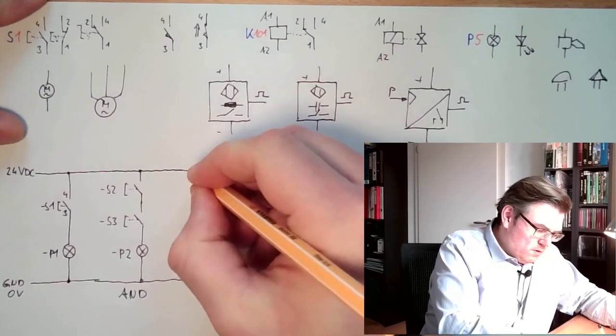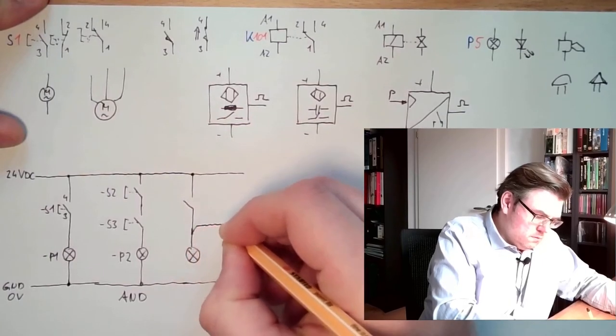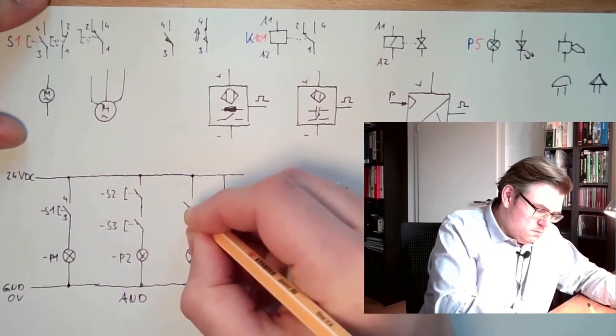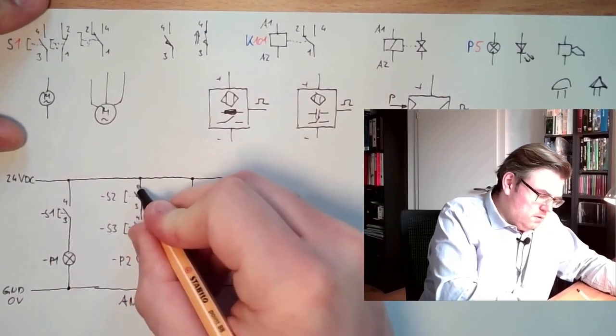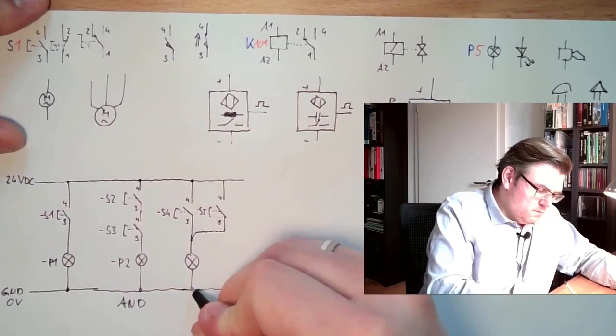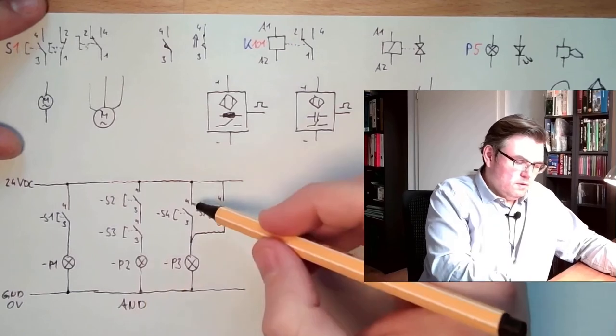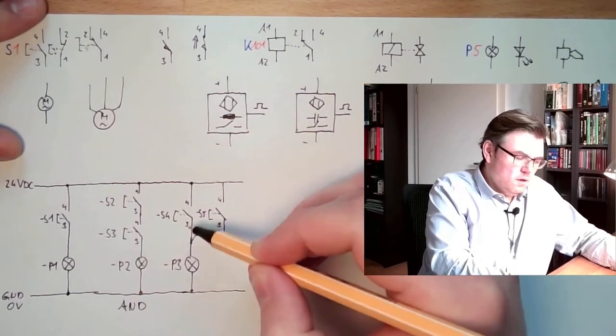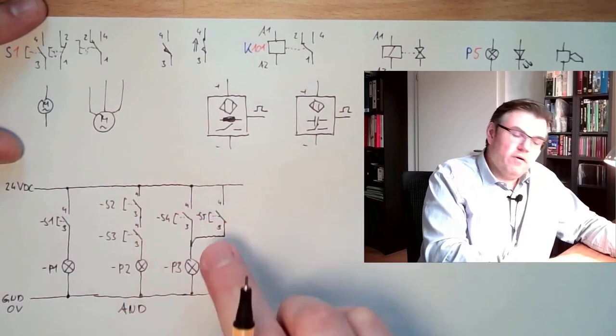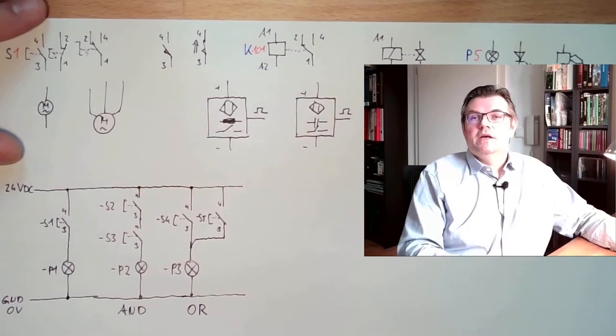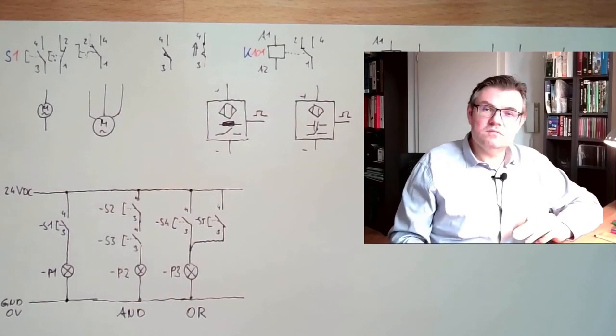Now, let's have a second look. S4, S5. P3. What happens if I press S4? Here, current comes. Already lit. What happens if I press S5? Here, current comes. Already lit. So, regardless if I'm pressing S4 or S5, this is an OR combination. So I can do logics with the simple use of my contacts.